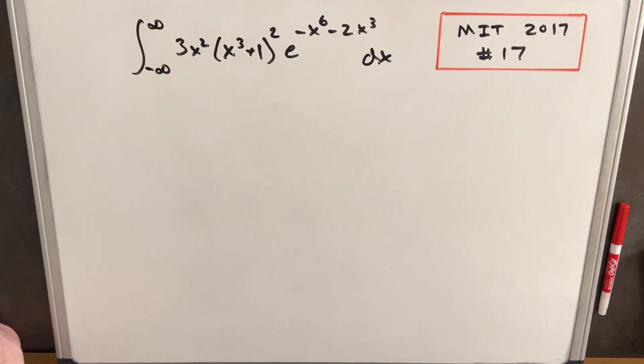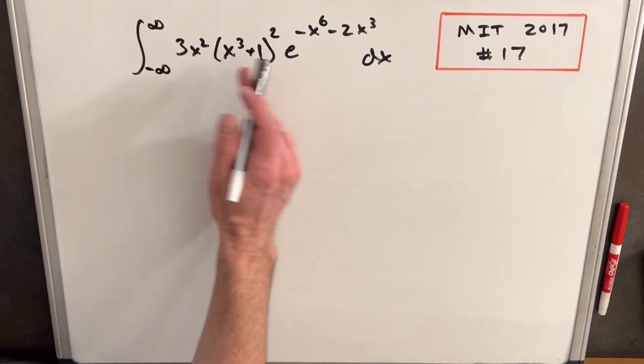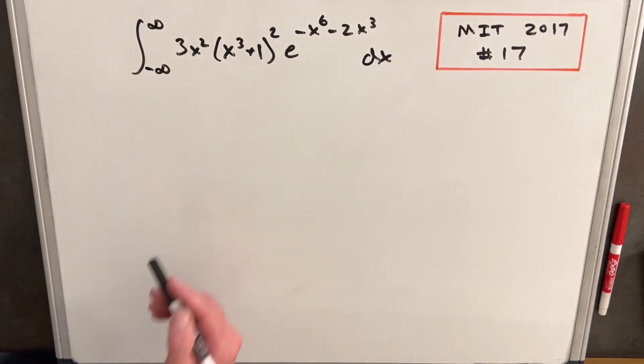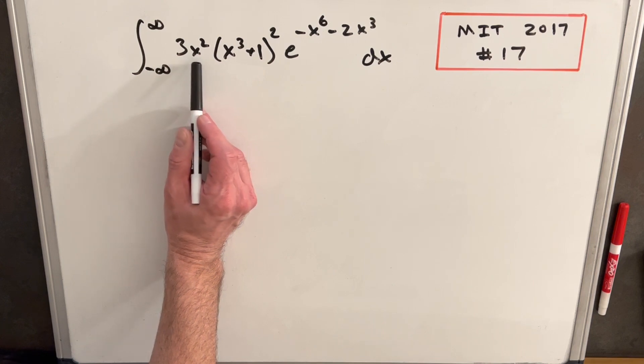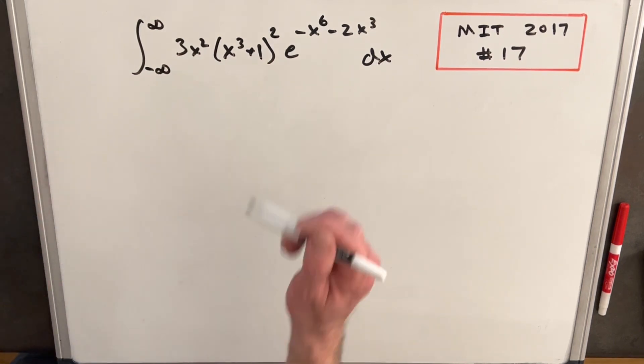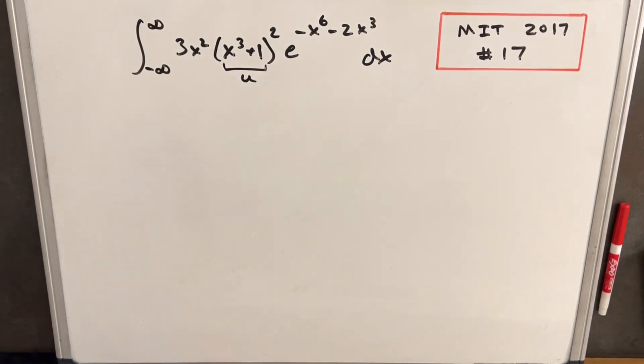We've got a big definite integral here. The thing I notice, we have a lot of x cubed terms. We have an x cubed there, an x cubed there. This is x cubed squared. And then what jumps out is this here is clearly the derivative of x cubed or the derivative of x cubed plus 1. So I think what I'll do is make this my u for a u substitution. See if that will clean things up a little bit.